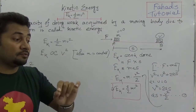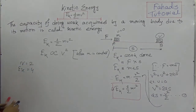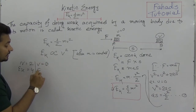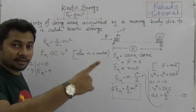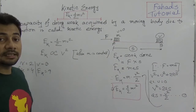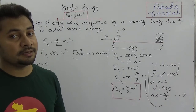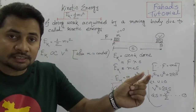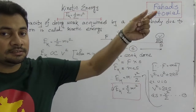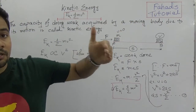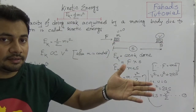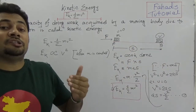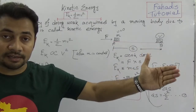When velocity is 3 times higher — triple — then the kinetic energy would be 9 times greater than before. In the equation EK = ½MV², if mass is constant then kinetic energy depends entirely on the velocity of the body. If velocity increases, kinetic energy increases proportionally — and it's actually squared. So when you increase velocity 4 times, the kinetic energy becomes 16 times greater than before.